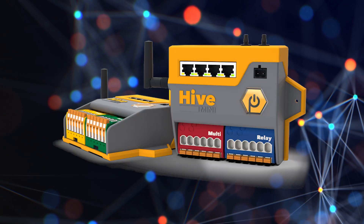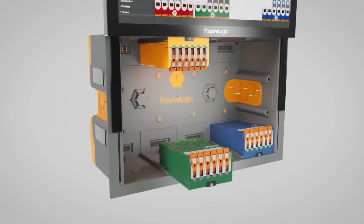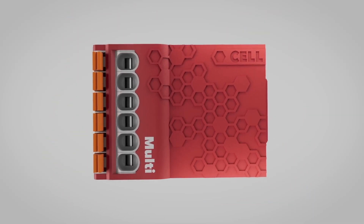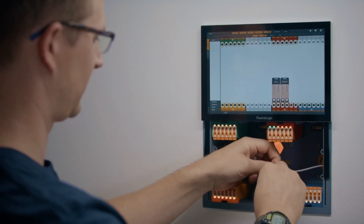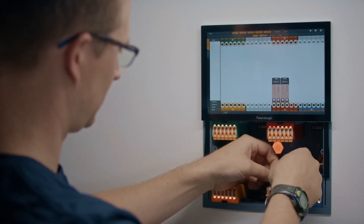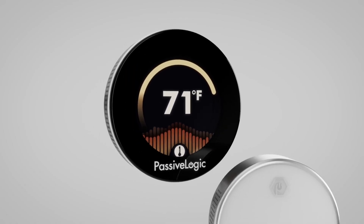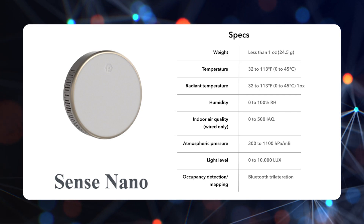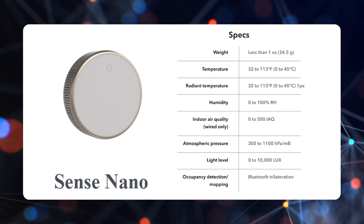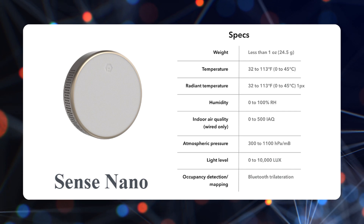The next hardware device is the Hive Mini, which doesn't have a touchscreen — it's more for boosting existing wireless connectivity and making installation more flexible. Within the Hive or Hive Mini are the cell modules — four different modular devices for input and output that connect wiring for all the different devices in the building and control and measure the devices connected to them. PassiveLogic also has two hardware sensor devices. The more sensors you have in a building, the more accurate the digital twin will be. They created the Sense Nano and the Sense Touch. The Nano has seven sensors: air temperature, radiant temperature, humidity, air quality, light level, air pressure, and occupant location services.